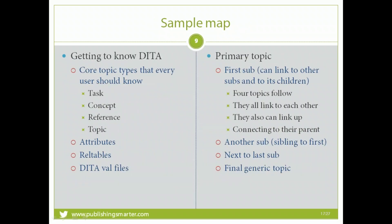A sample map might organize information so that people can get to know DITA. That's the high-level topic, and underneath it a discussion about core topic types every user should know. I also want to introduce people to the ideas of attributes, rel tables, and DITA val files. So I have a primary topic — Getting to Know DITA — and my first subordinate: core topic types that every user should know.